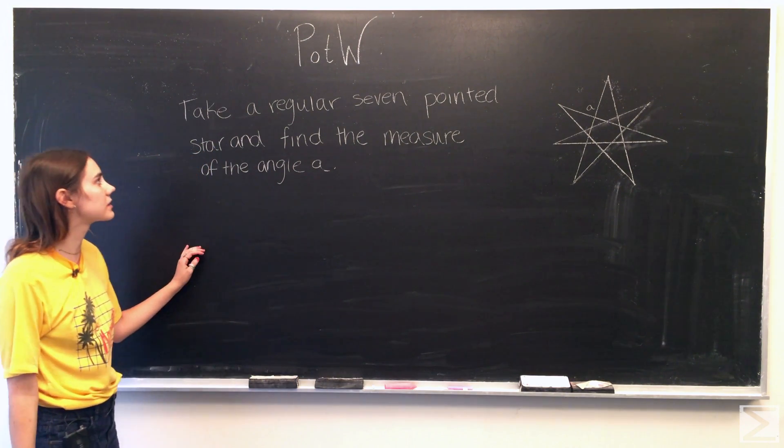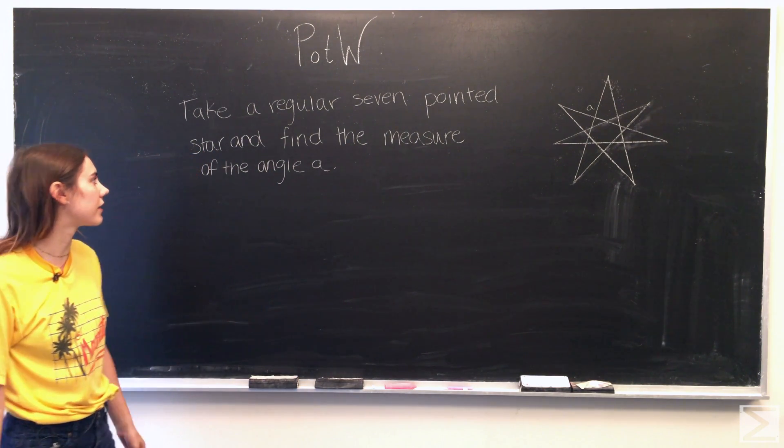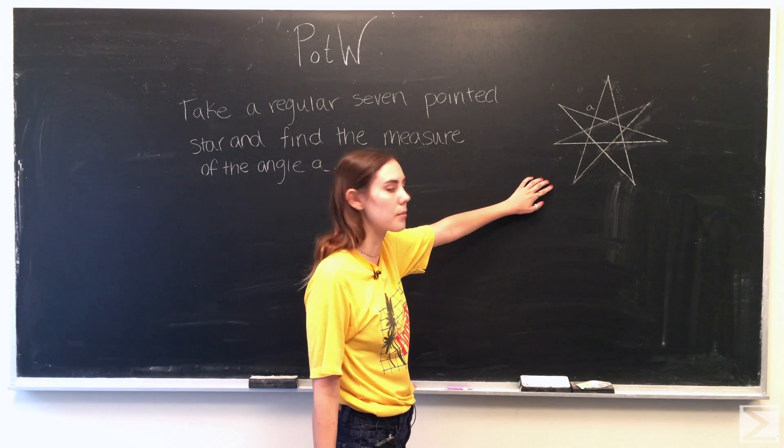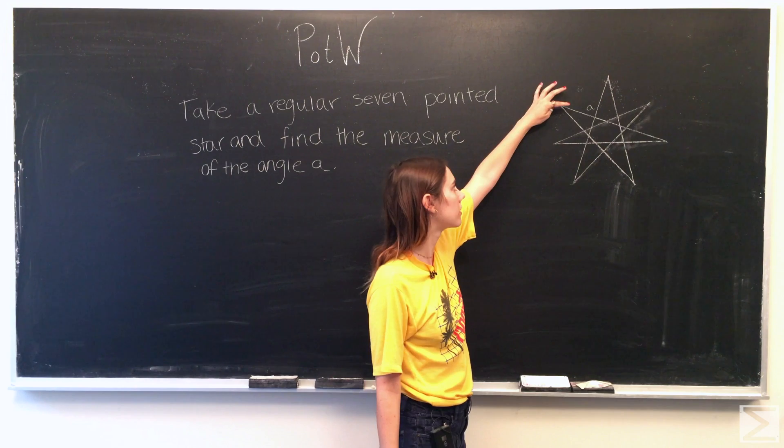The problem is: take a regular seven-pointed star and find the measure of the angle A. So we've drawn a diagram of what the star would look like with the angle right here.